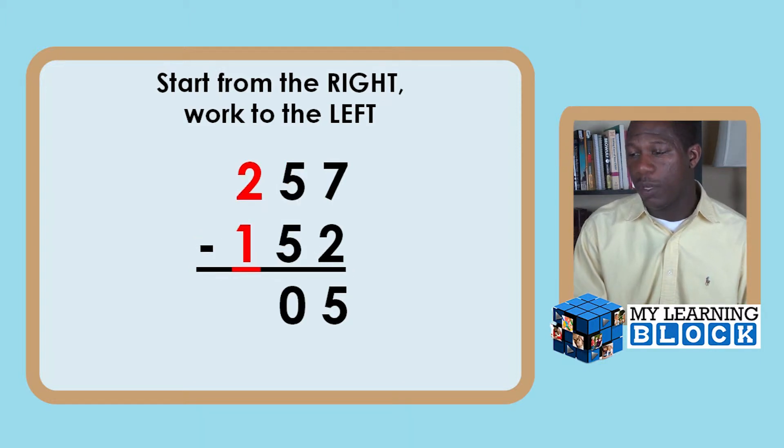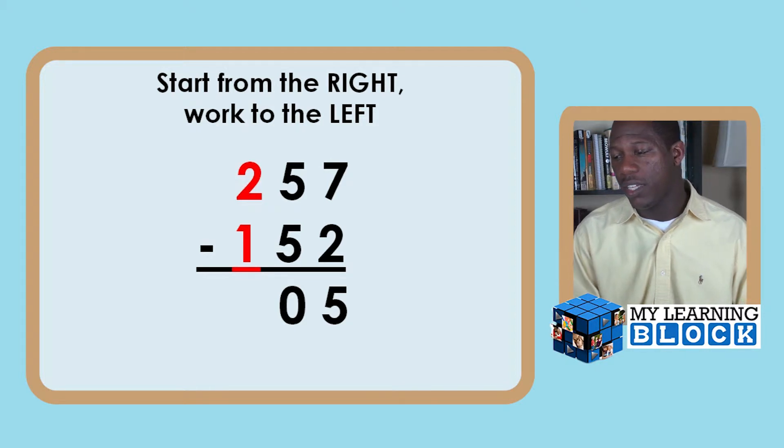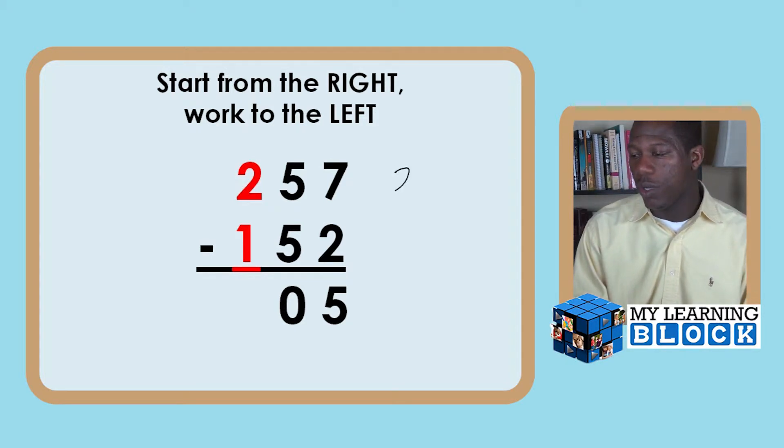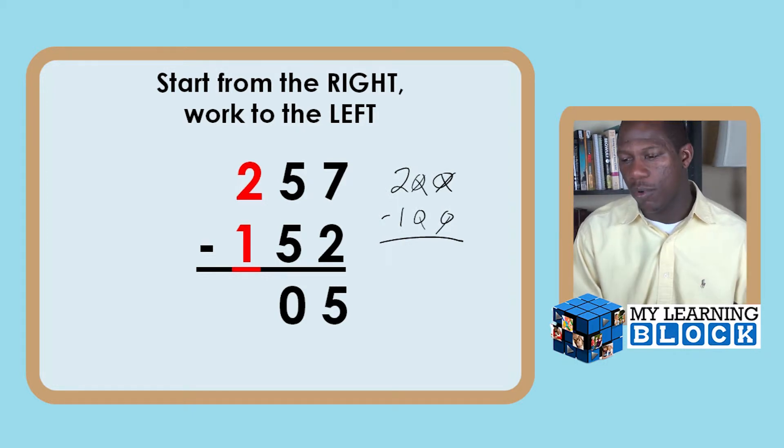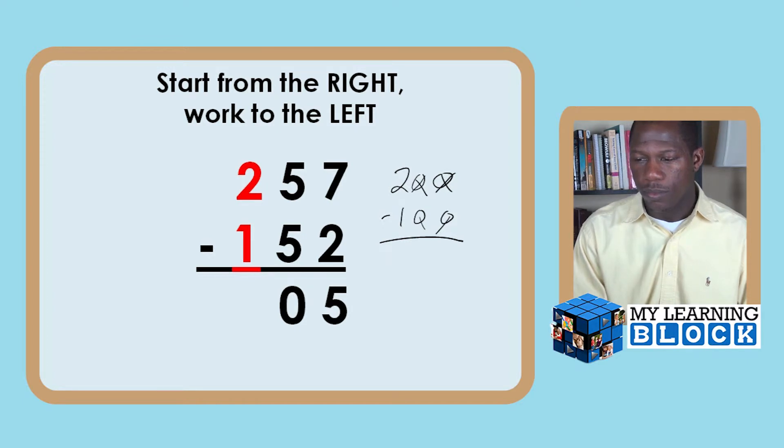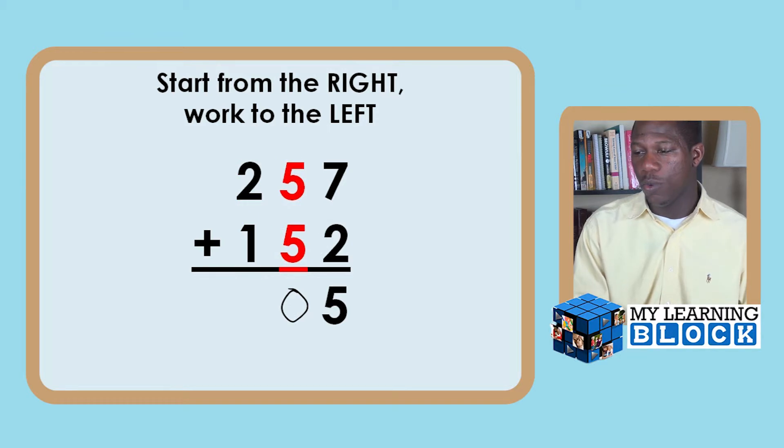And then lastly, they will go to the hundreds place and they will see two minus one, but really it's two hundred minus one hundred, and we've already accounted for the tens and the ones place. And I should have said this for the tens as well, because the tens there, it's really not five minus five, it's 50 minus 50, but we have already accounted for that ones place.